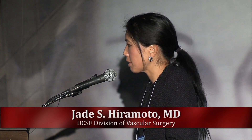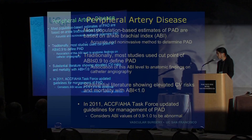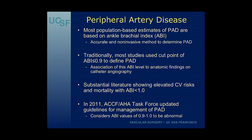Most population-based estimates of peripheral artery disease are based on measurement of the ankle brachial index, which is a ratio of the systolic pressure at the ankle compared to the arm. It's an accurate and non-invasive method to determine PAD, and traditionally most studies have used a cut point of an ABI less than 0.9 to define PAD. This is based on historical association of this ABI level with anatomic findings seen on catheter angiography.